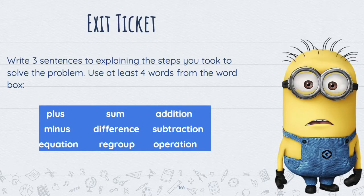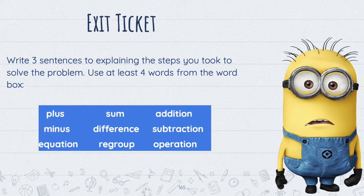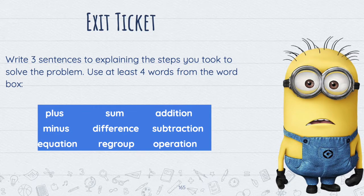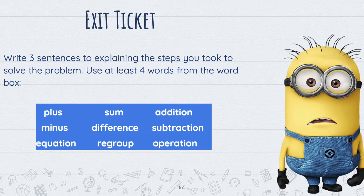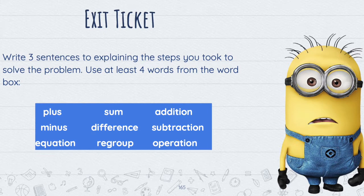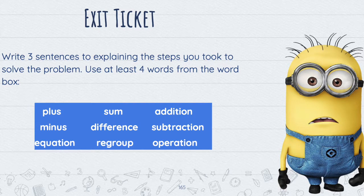Now comes the fun part — you solved the problem, and now it's time to write about it. Use all the expert math words you just reviewed to talk about how you solved the problem and which steps you took. Write three different sentences using those words. There is a word bank and your job is to use at least four of those words: plus, sum, addition, minus, difference, subtraction, equation, regroup, operation.